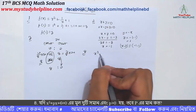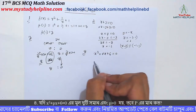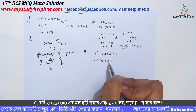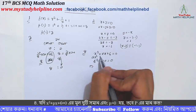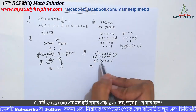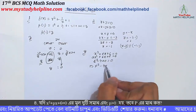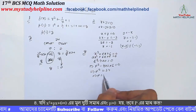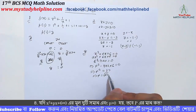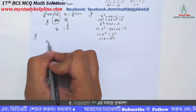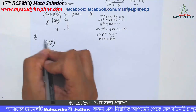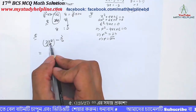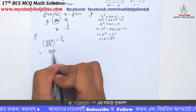સમીકરણ x square plus x plus x equal to zero. parallel, ઉત્તર 1 by 3 કરી, 125 by 27.